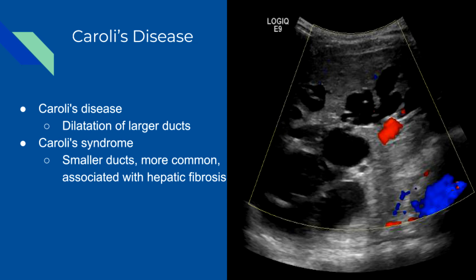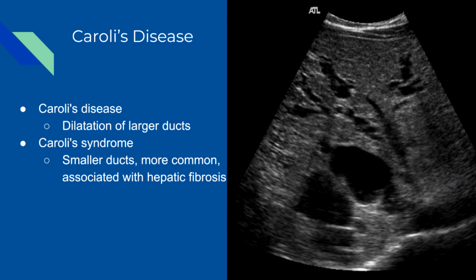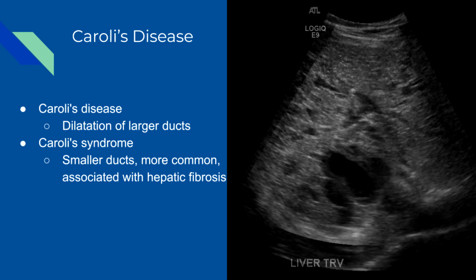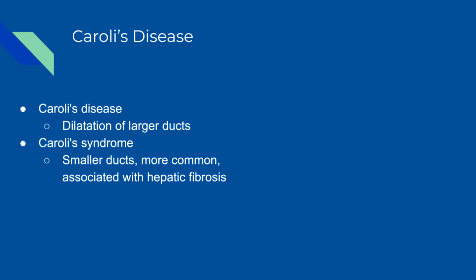There are two types: Caroli's disease, which is dilatation of the larger ducts, and Caroli's syndrome, which is dilatation of the smaller ducts. Caroli's syndrome is more common and is associated with hepatic fibrosis.